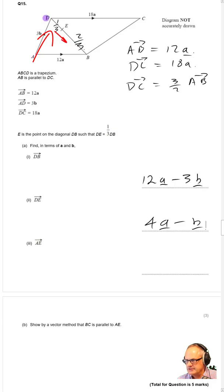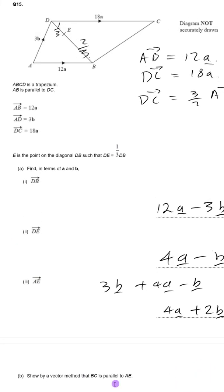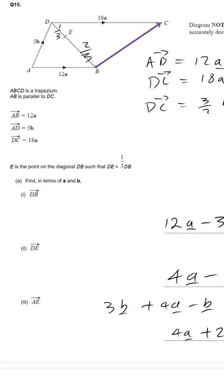We go along from A to D and then from D to E, so we're going to do 3b plus whatever DE is, which is 4a minus b. We add those together and we get 4a plus 2b. And it says show by vector method that BC is parallel to AE.